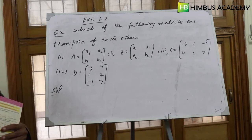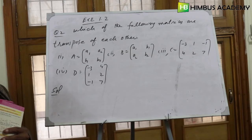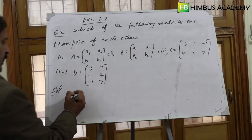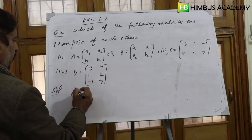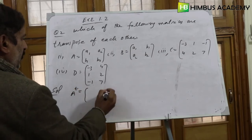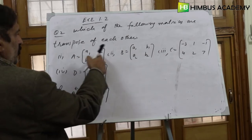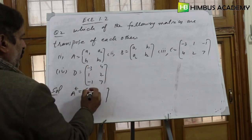So when we find A transpose - what will A transpose be? I've explained to you: first row should be first column. So a1, a2 should be first column [a1; a2], and b1, b2...